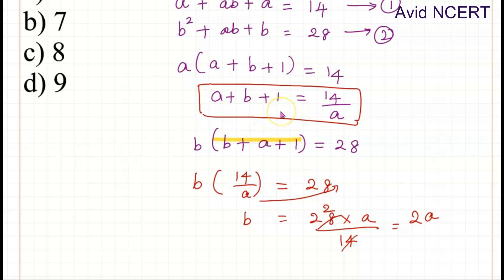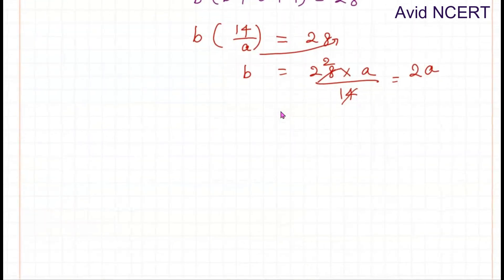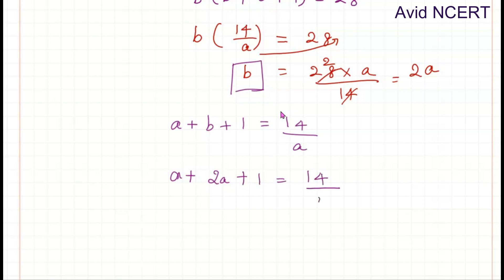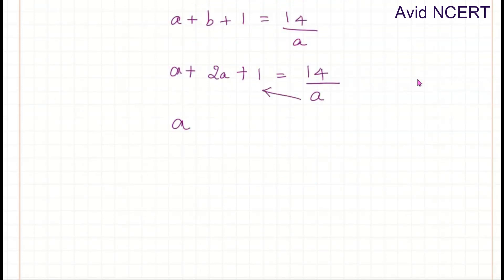Now substitute the value of B as 2A in the first equation, which is A + B + 1 equals 14/A, where B equals 2A. Substituting that here, which is A + 2A + 1 equals 14/A. Cross multiplication gives A² + 2A² + A equals 14. Rearranging the equation gives 3A² + A - 14 equals 0.